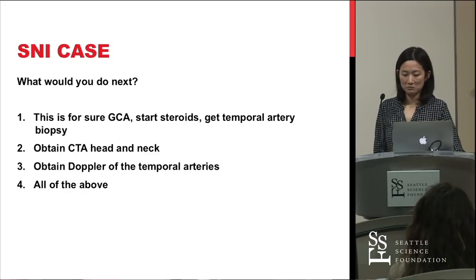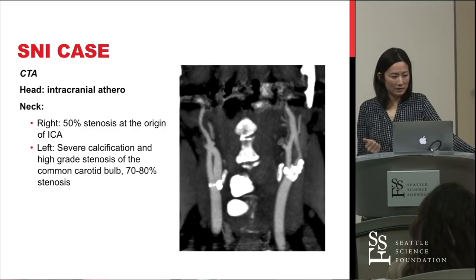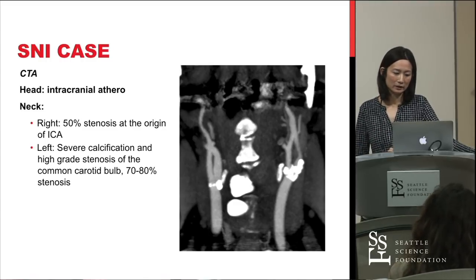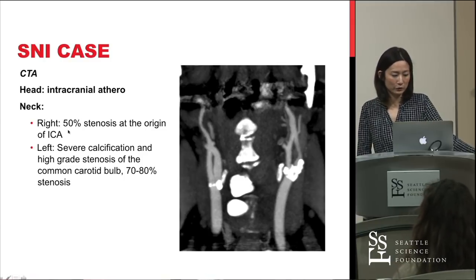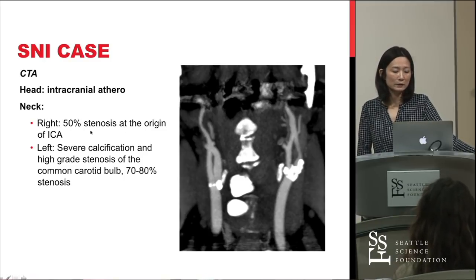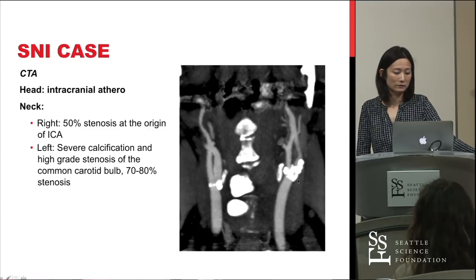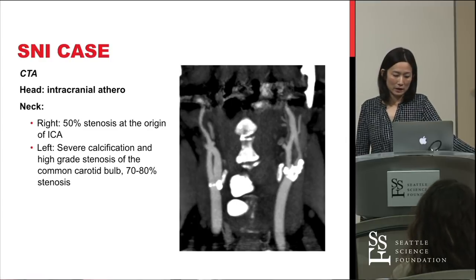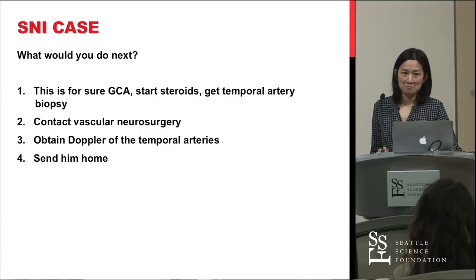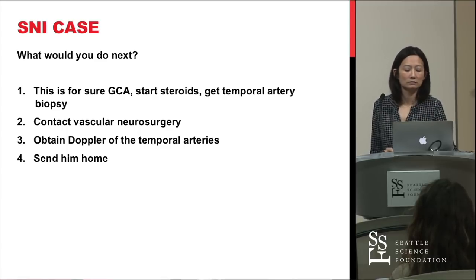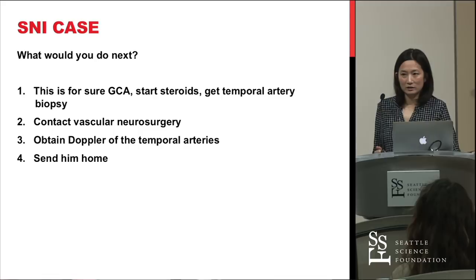He then gets a CTA of the head and neck. Intracranially he has atherosclerosis. Extracranially, there is a high-grade stenosis at the origin of the ICA on the right side. On the left, there is severe calcification and high-grade stenosis of the common carotid bulb at 70–80%. The question then becomes: is this definitely giant cell arteritis, contact vascular neurosurgeons, obtain a temporal artery Doppler, or send him home?